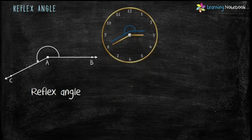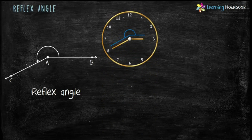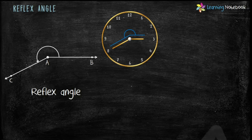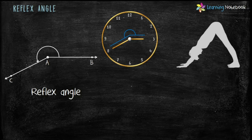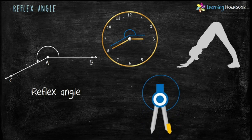Let's see some real life examples of reflex angle. In a clock, the hands can make a reflex angle. This yoga pose also shows a reflex angle. The outer angle of a compass also makes a reflex angle.